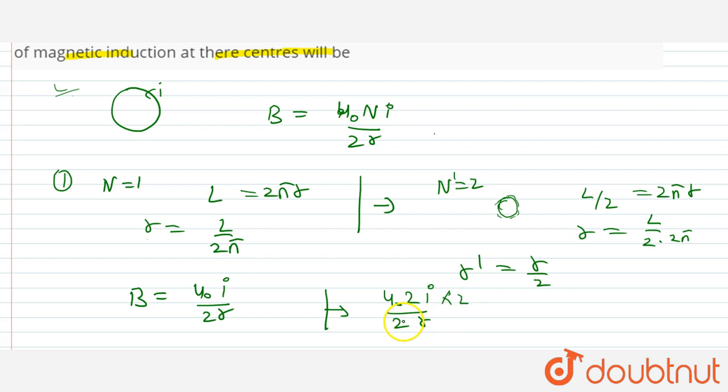So we have 4 mu naught i upon 2r and this is mu naught i upon 2r. So basically our new magnetic field is 4 times.